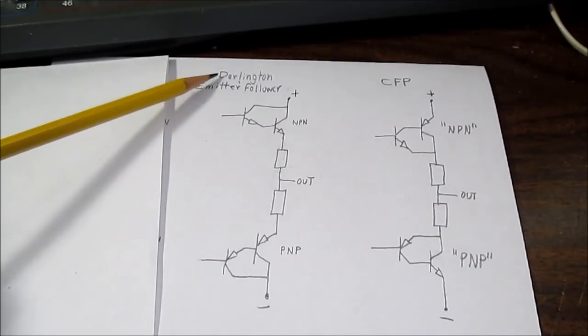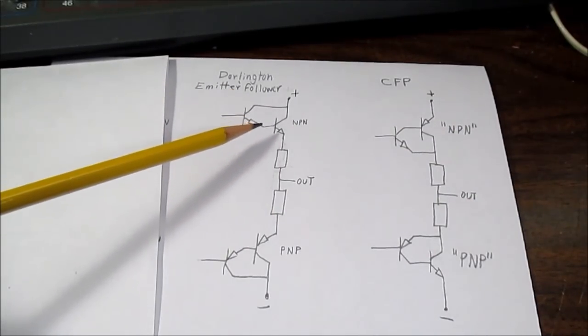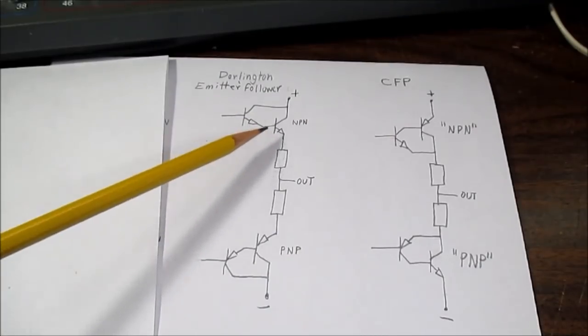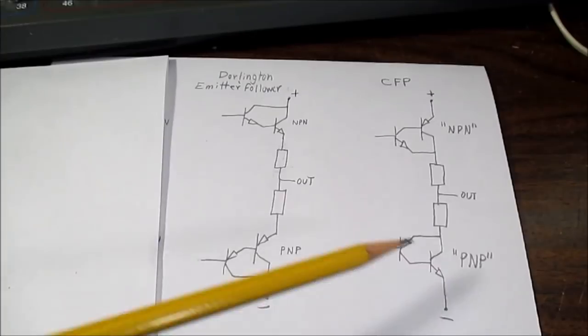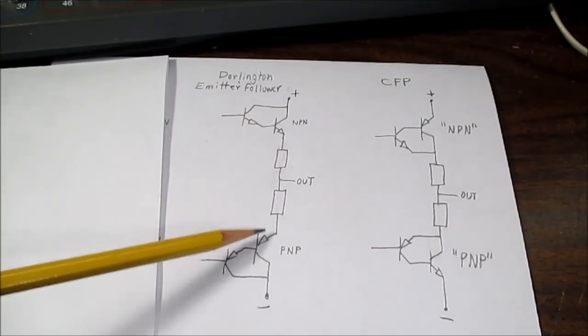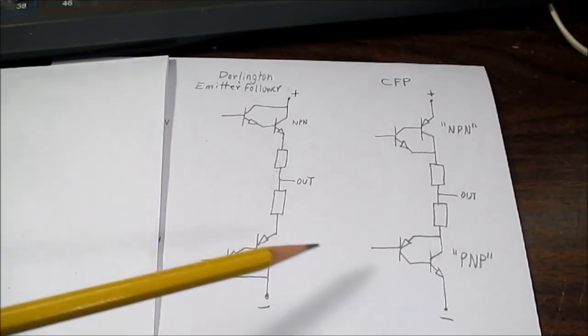Okay, so why do other people favor the Darlington configuration? Although both configurations can go unstable and oscillate, the Darlington tends to be a little bit more stable than this.